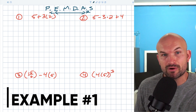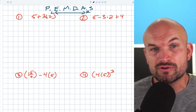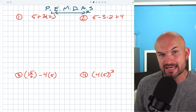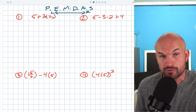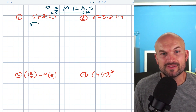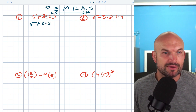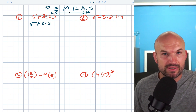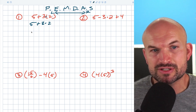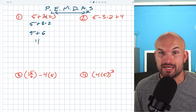In this first example, whenever we have a number right next to a parentheses, the implied operation is going to be multiplication. There's parentheses here, but inside those parentheses there's really nothing we can do — it's just a two. We can't simplify that any further, so we can rewrite this as three times two. We know that multiplication has to come before addition, so three times two is six. We have five plus six, and five plus six is going to equal 11.